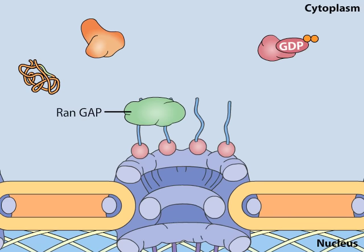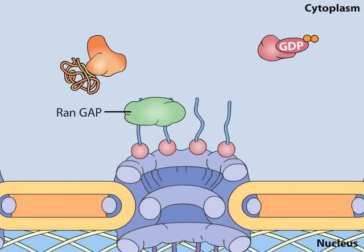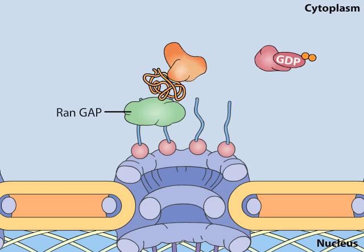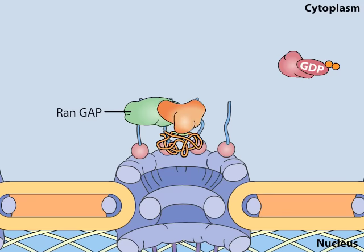RAN plays a key role in protein import and export. Note that while RAN is bound to GDP, it cannot disrupt the binding of importin to a cargo protein.